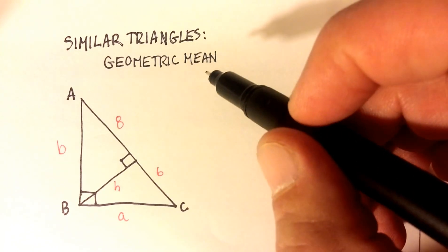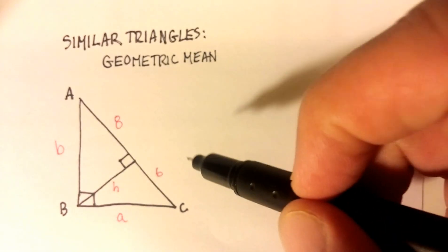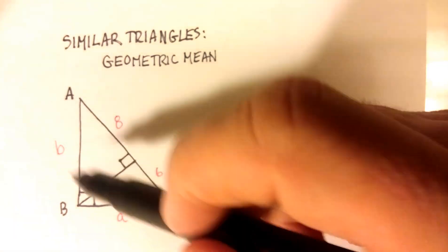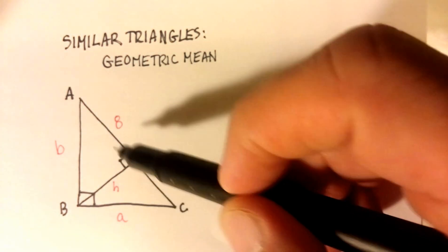Okay, in this video, I'm going to show you how to use something called the geometric mean to solve for different lengths of a right triangle.